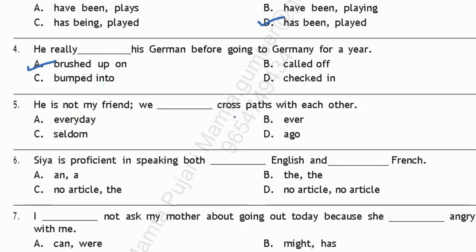Question five: 'He is not my friend; we dash cross paths with each other.' 'Cross paths' means to meet somebody unexpectedly. The answer is option C: 'We seldom cross paths with each other.' Question six: 'Sia is proficient in speaking both dash English and dash French.' Before languages we don't need any article, so there should be no article before English and no article before French. The answer is option D.